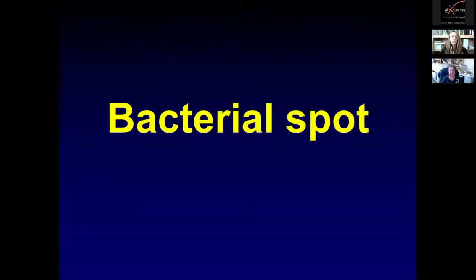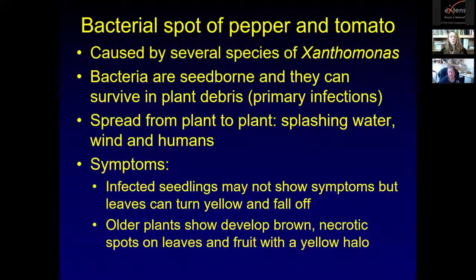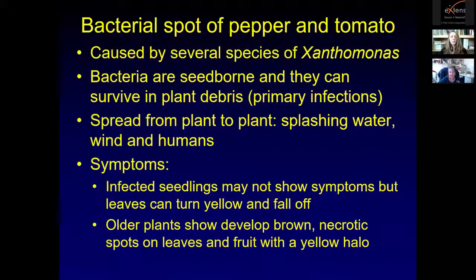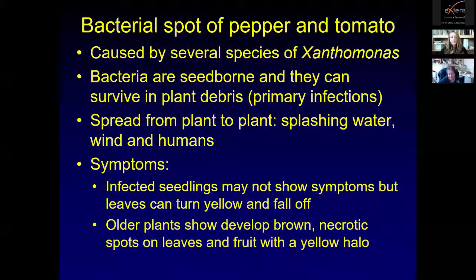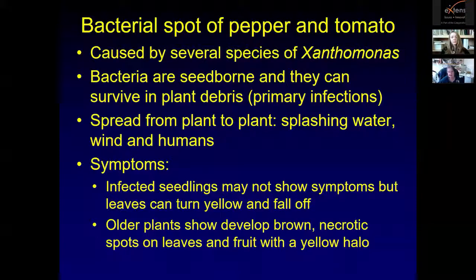Bacterial spot is another disease that showed up in Utah about three years ago on peppers and tomatoes. It's caused by several species of a bacterium called Xanthomonas. The bacteria can be seed-borne and can also survive in plant debris for about three years, so if you have infected plant material left behind in the field and you plant peppers or tomatoes there the next year, you could get infections from that debris. It spreads from plant to plant by splashing water, wind, or by humans walking through fields.